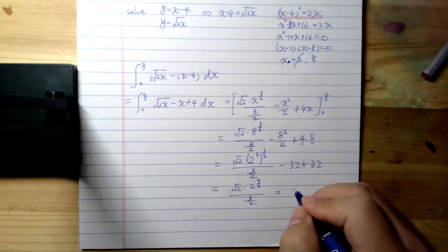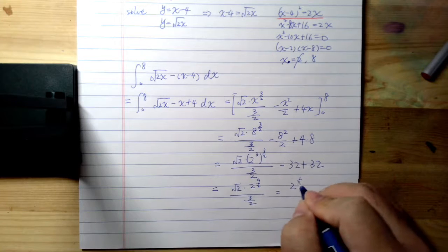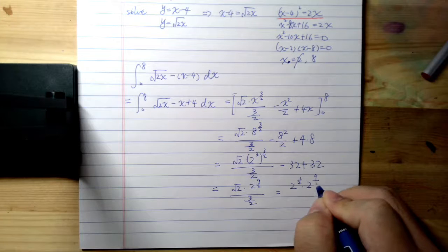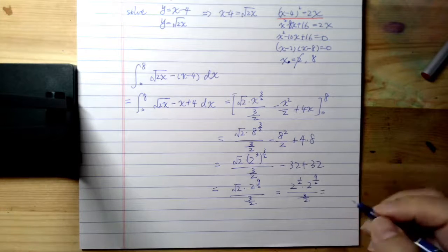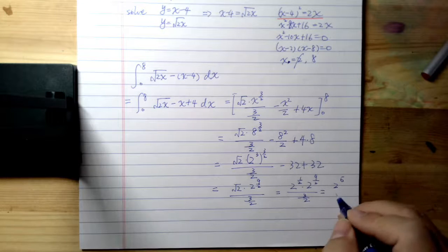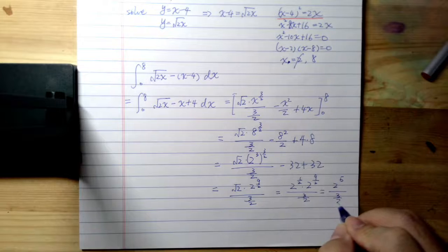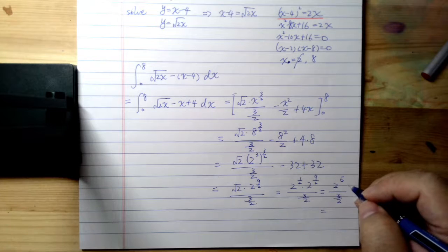Well, turns out we can do a little bit more. So it's 2 to the power of 1/2 times 2 to the power of 9/2, 3/2. And then, this is 2 to the power of 5 over 3/2. Turns out 2 to the power of 5 is 32.